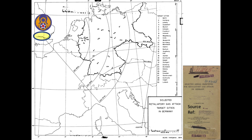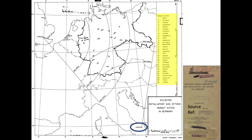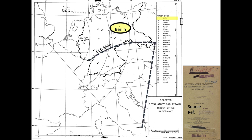The U.S. 8th Army Air Forces operating near London is located here. The U.S. 15th Army Air Forces operating out of Foggia, Italy is located here. The 30 target cities are identified in this column. The city of Berlin is highlighted on the map. Berlin will be attacked solely by the 8th Army Air Forces, as it is outside the 650-mile range of the 15th Army Air Forces.